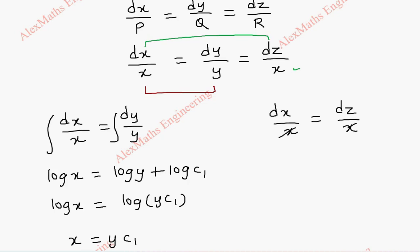And we can cancel x on both sides. And we are left with only integral dx, integral dz. So on integration, this is x and this is z.